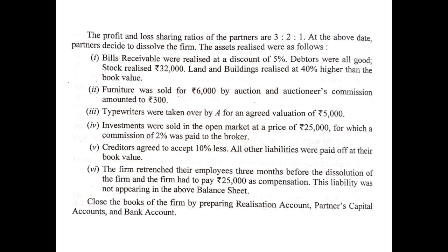Debtors were all good — meaning the entire 40,000 of debtors was realized in cash. On the credit side: by bank, value of debtors 40,000. Stock realized 32,000 — on the credit side: by bank (stock realized) 32,000. Land and buildings realized at 40% higher than the book value, so 40% more than the book value will be realized.